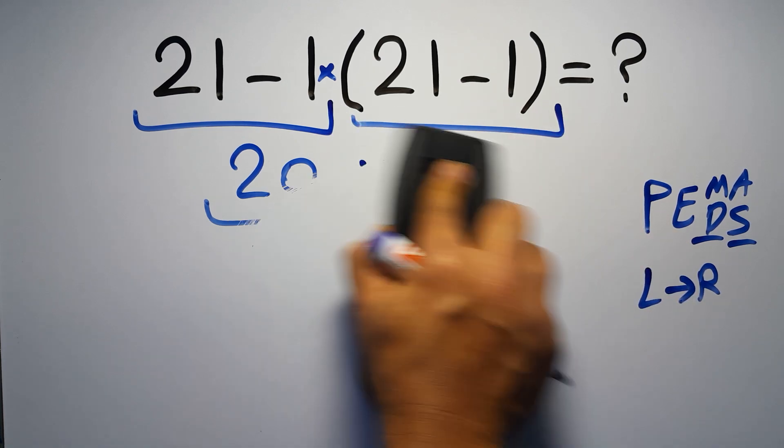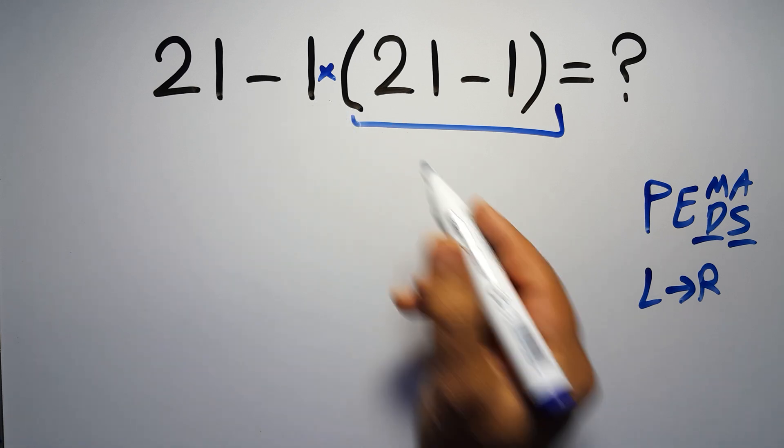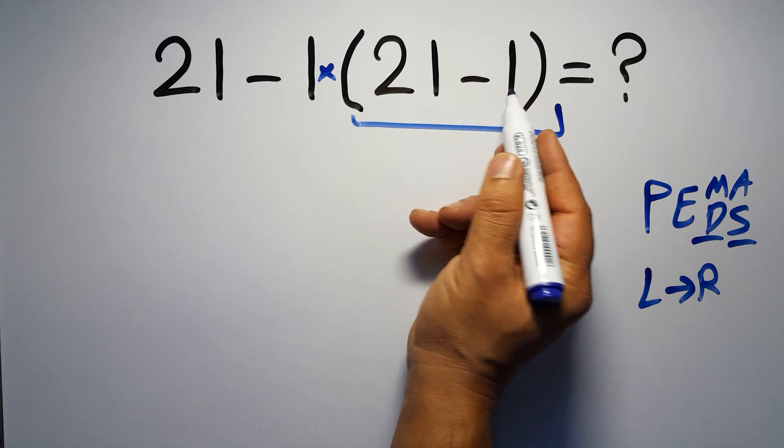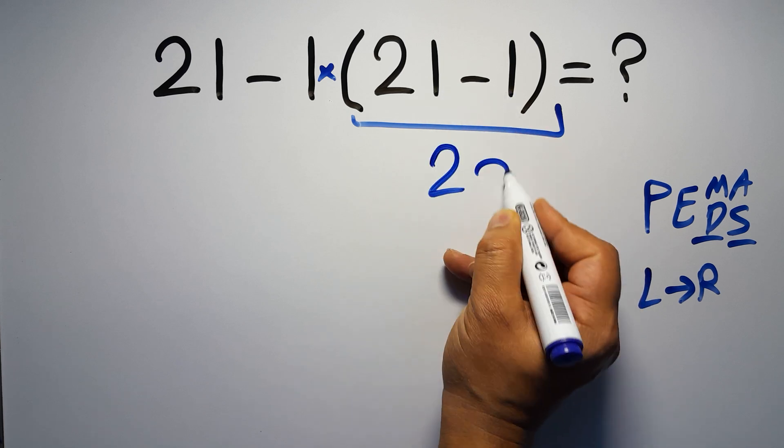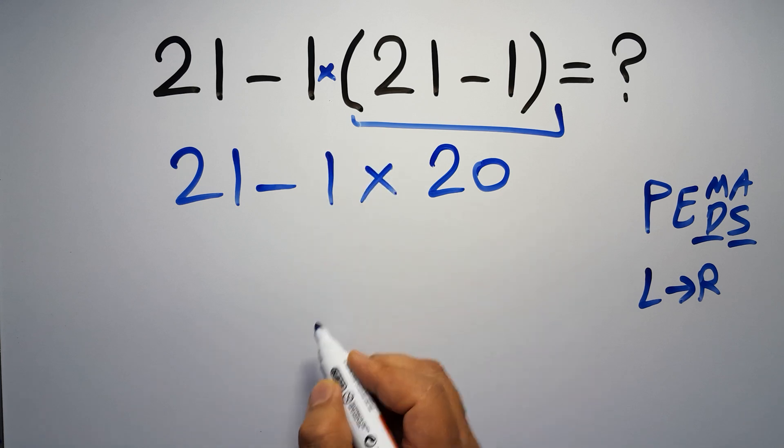So first we have to do this parentheses. Inside this parentheses we have 21 minus 1 which equals 20, so 21 minus 1 times 20.